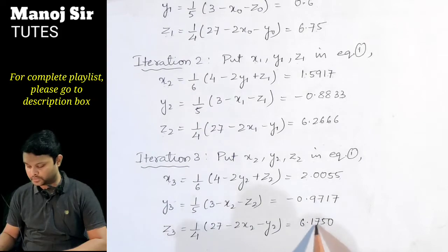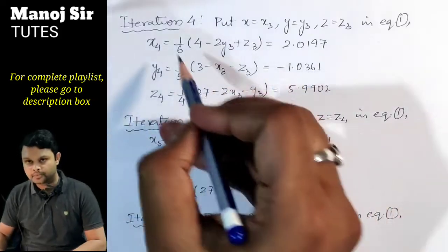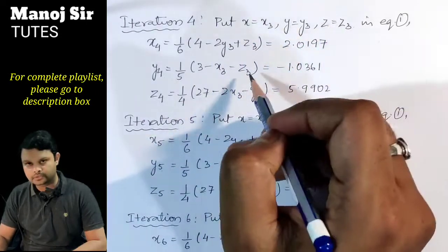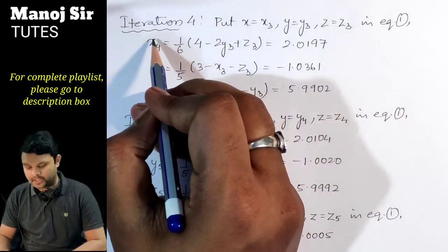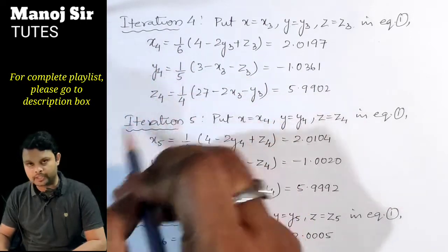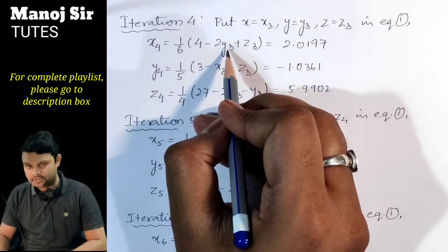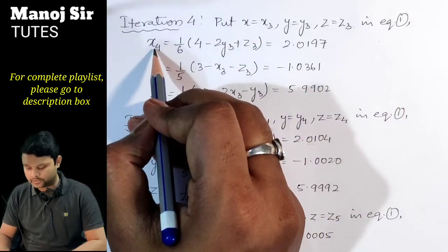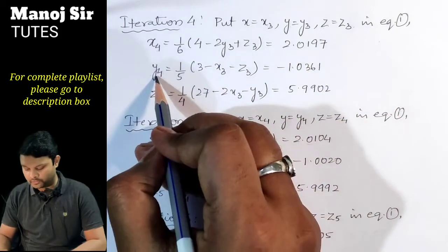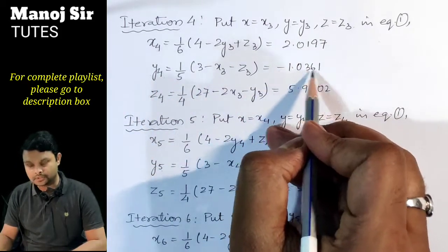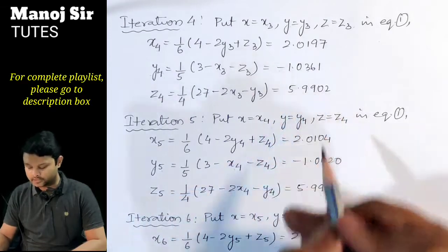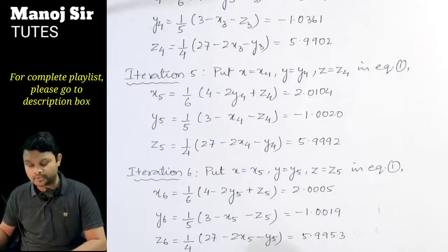For the fourth iteration, we substitute x3, y3, z3 into equation (1) to find x4, y4, z4 using subscript 3. We get: x4 = 2.0197, y4 = −1.0361, z4 = 5.9902.